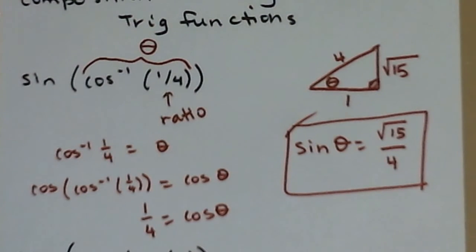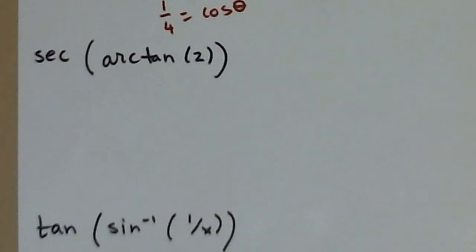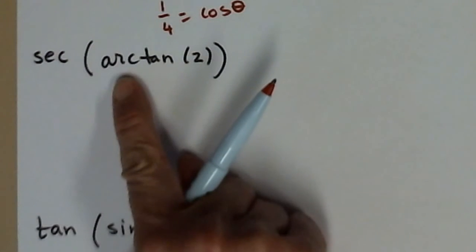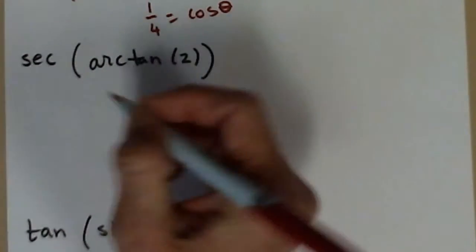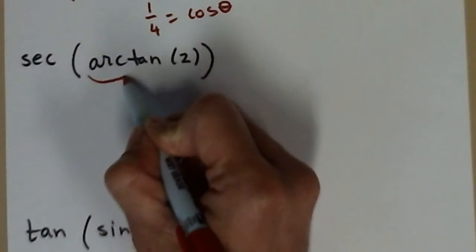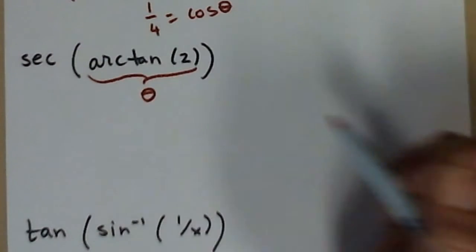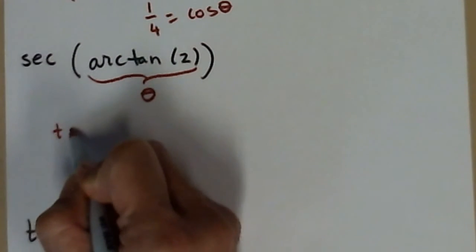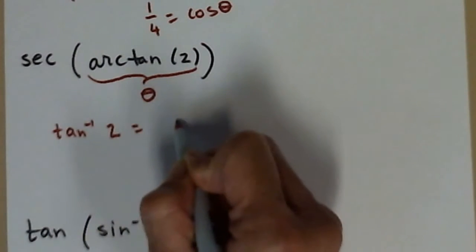Let's try two more. Secant of the arctangent of two. Arctangent, remember this is just a different way to write inverse tangent. This is an inverse trig function, which gives an angle.